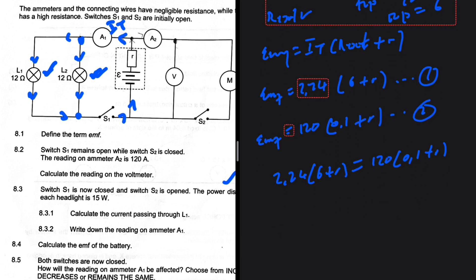So we need to solve for 2.24 multiplied by 6. 13.44 plus 2.24R being equal to 12 plus 120R. So 13.44 minus 12. That is 1.44.